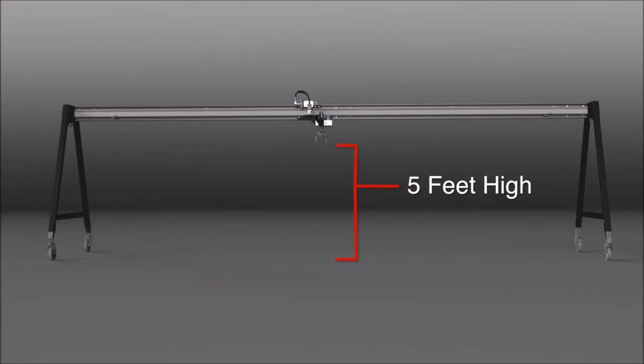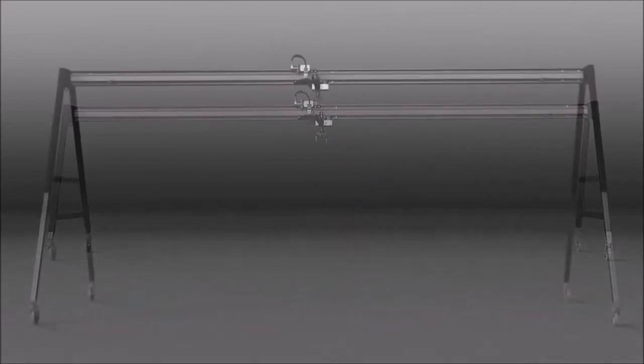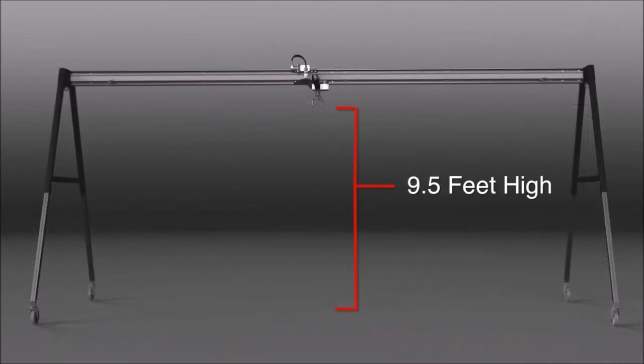Extendable legs give you 4.5 feet of height adjustment, allowing you to raise and lower your jet head from 5 to 9.5 feet. This way, you can fine-tune the jet standoff distance and maximize cleaning power for the bundle you are blasting.